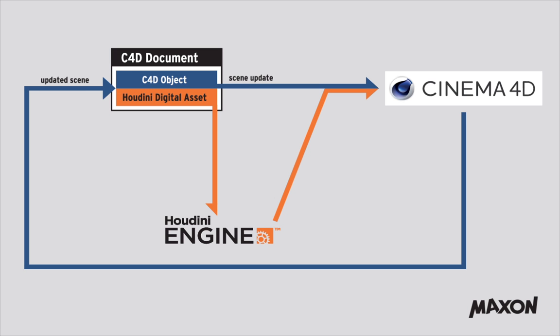Once a scene update has been initiated, either by changing a parameter or by playing the animation, Cinema 4D treats the native object as usual and performs any relevant calculations.